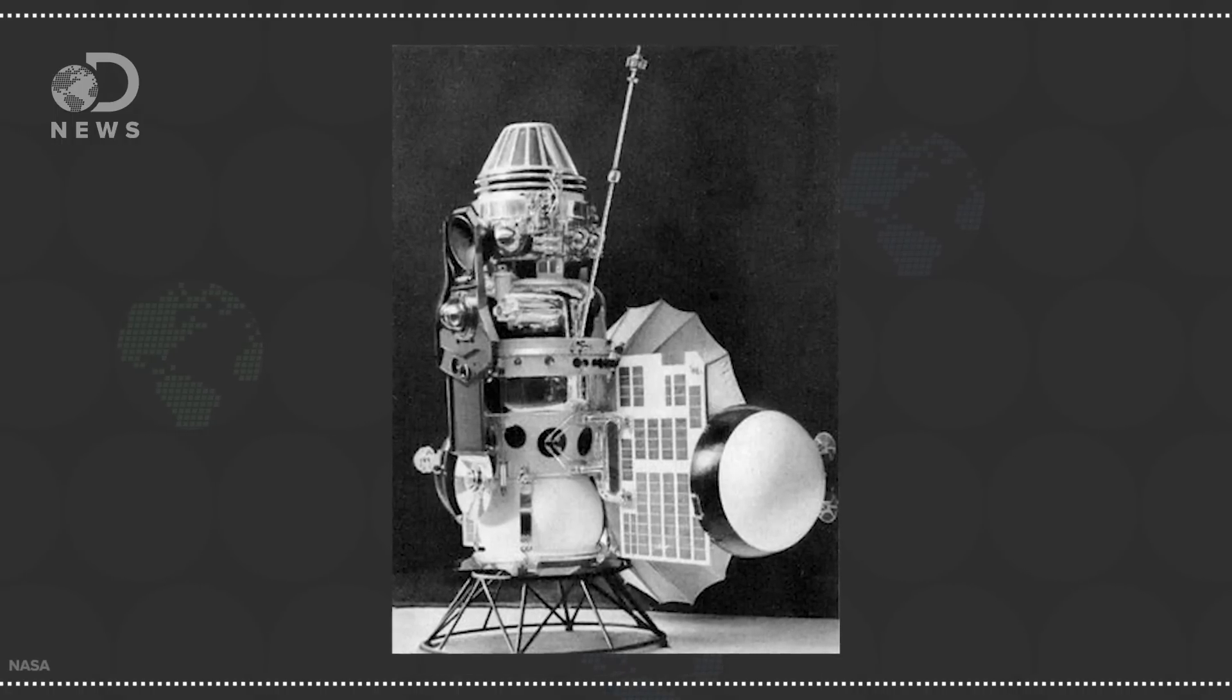This isn't the first probe crash, by any means. Accidents do happen, like in 1966, when humans made their first physical contact with another planet, as Russian probe Venera 3 crashed into Venus. It was supposed to land and measure the atmosphere, but it didn't.